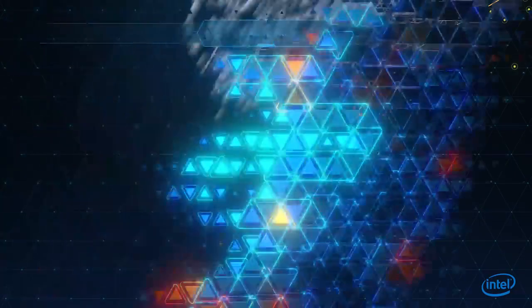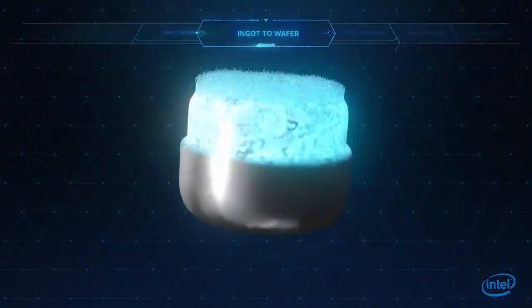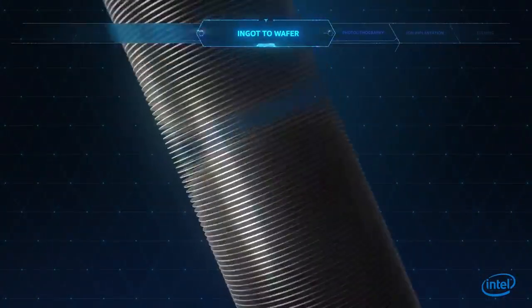The process begins when silicon-rich sand is melted and cooled, forming a solid, which is then sliced into wafers.